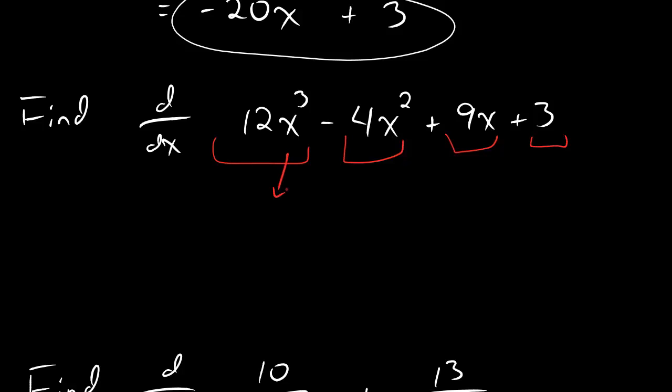So, what happens to x cubed is that it becomes three x squared. Now, remember the fact that you started with a twelve and put that back in. What happens to x squared is it becomes two x. And now, dudes, remember the fact that actually what we started with was not a four. It was a minus four.